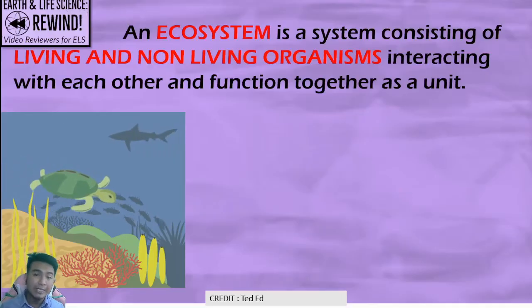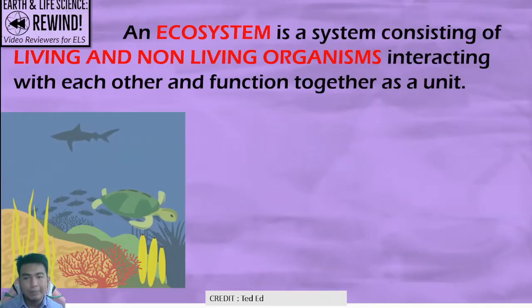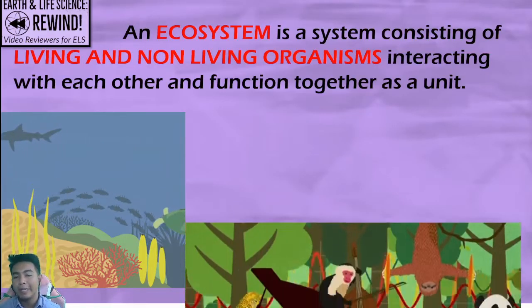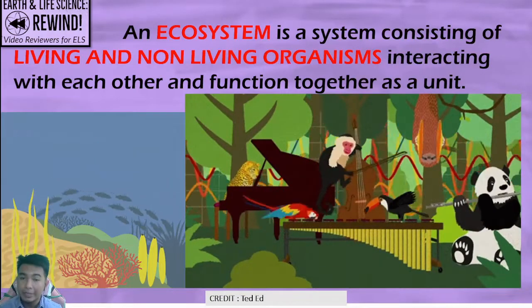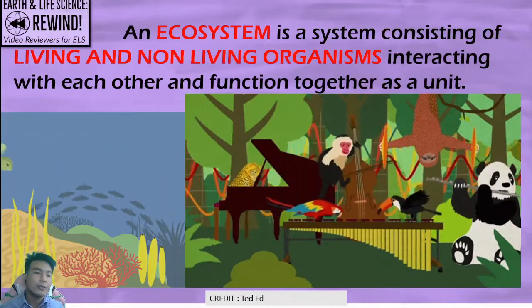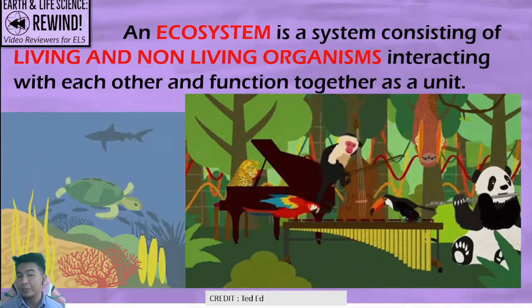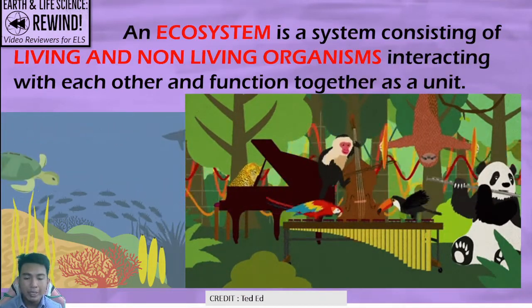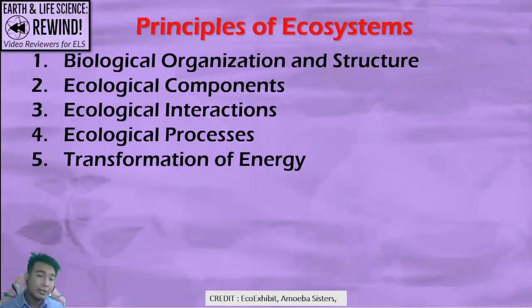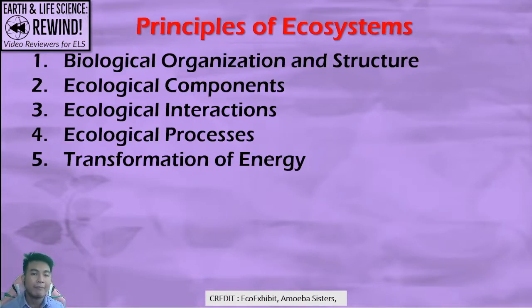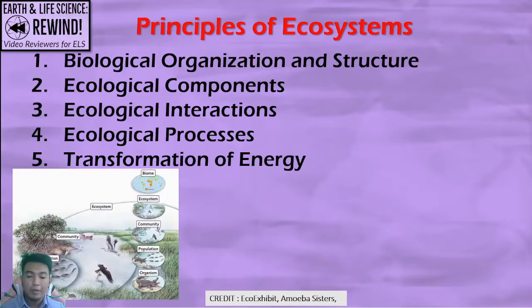An ecosystem is a system consisting of living things and non-living things, interacting with each other, affecting each other, and functioning together as a unit. To understand ecosystems, we need to understand first its principles — everything that is working within it.